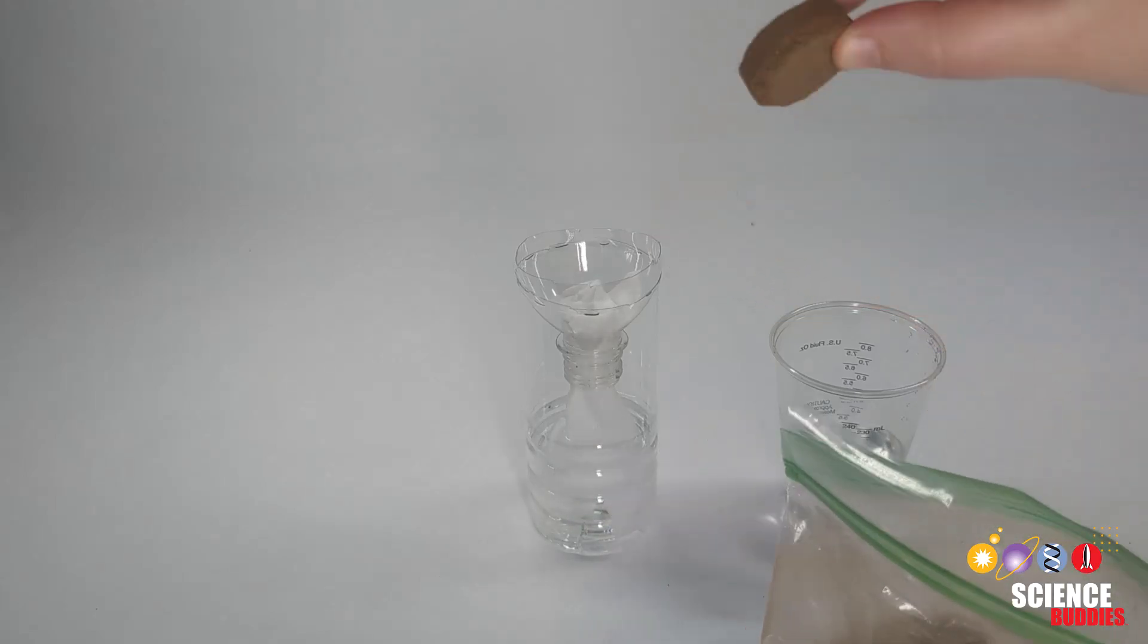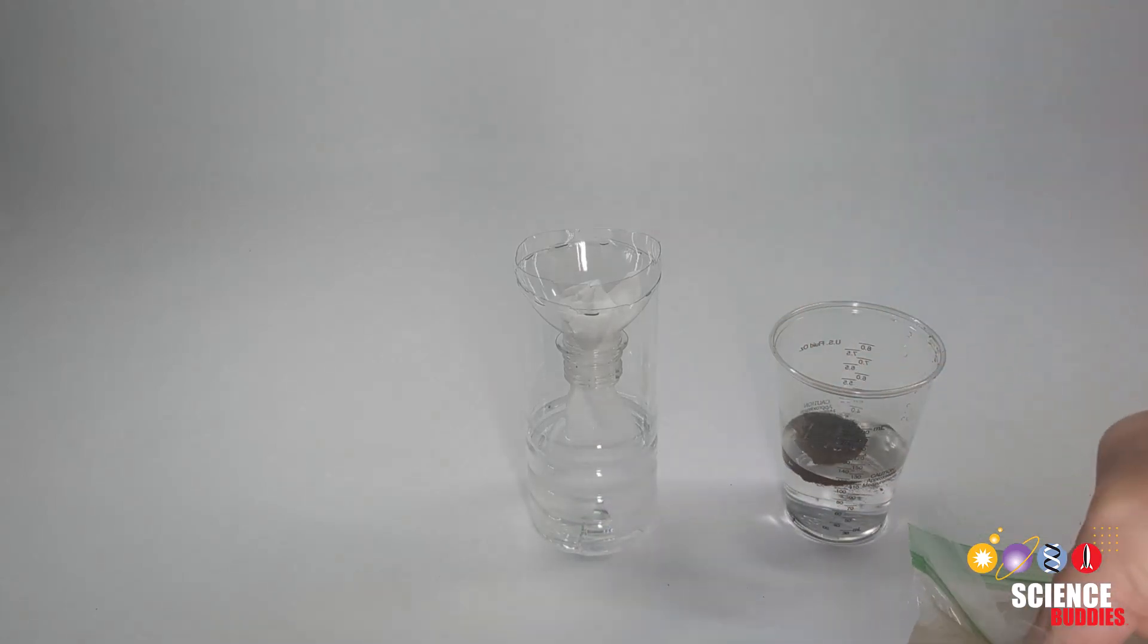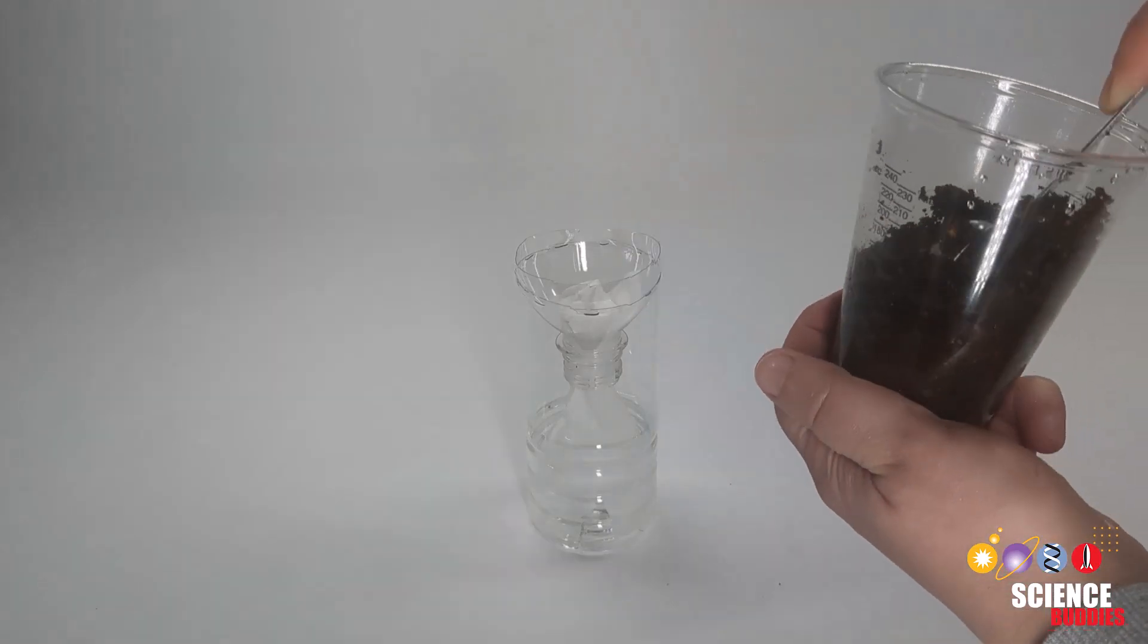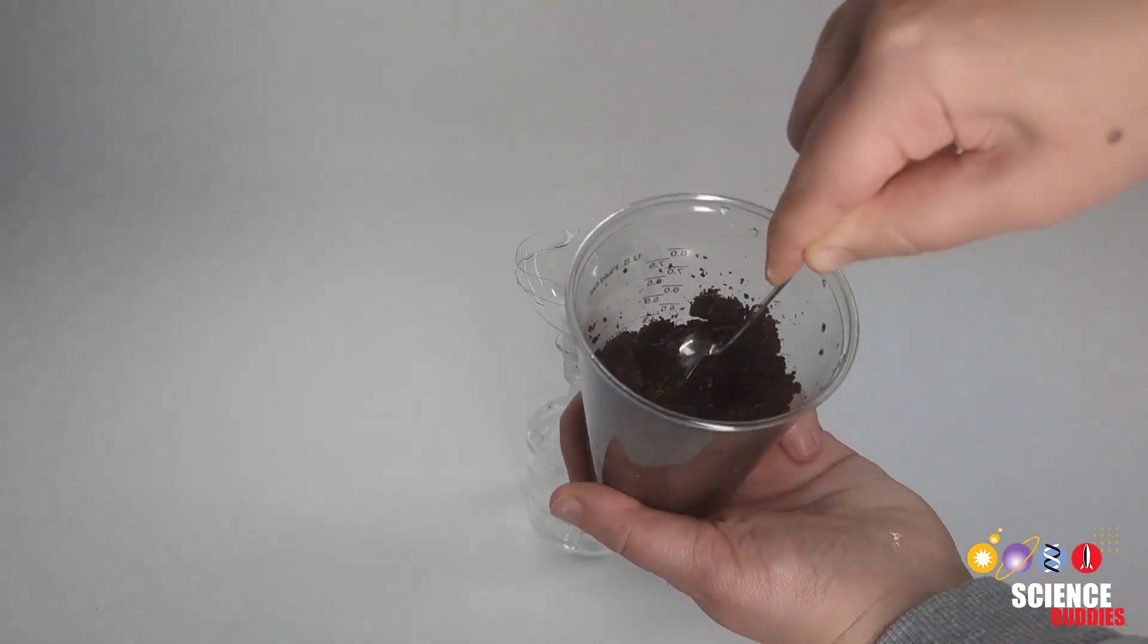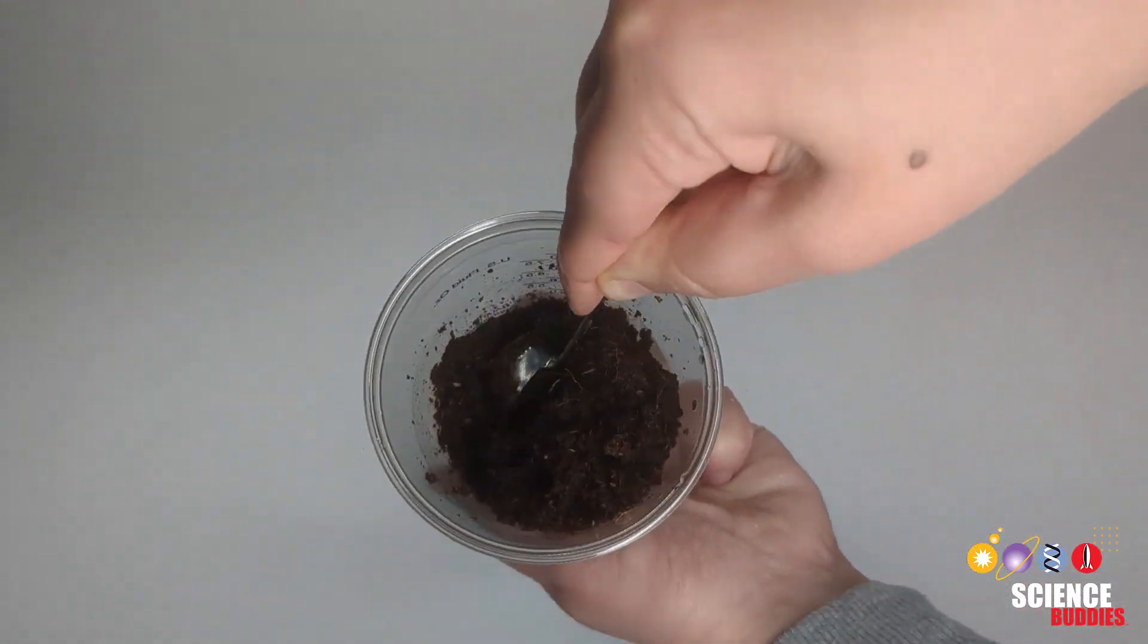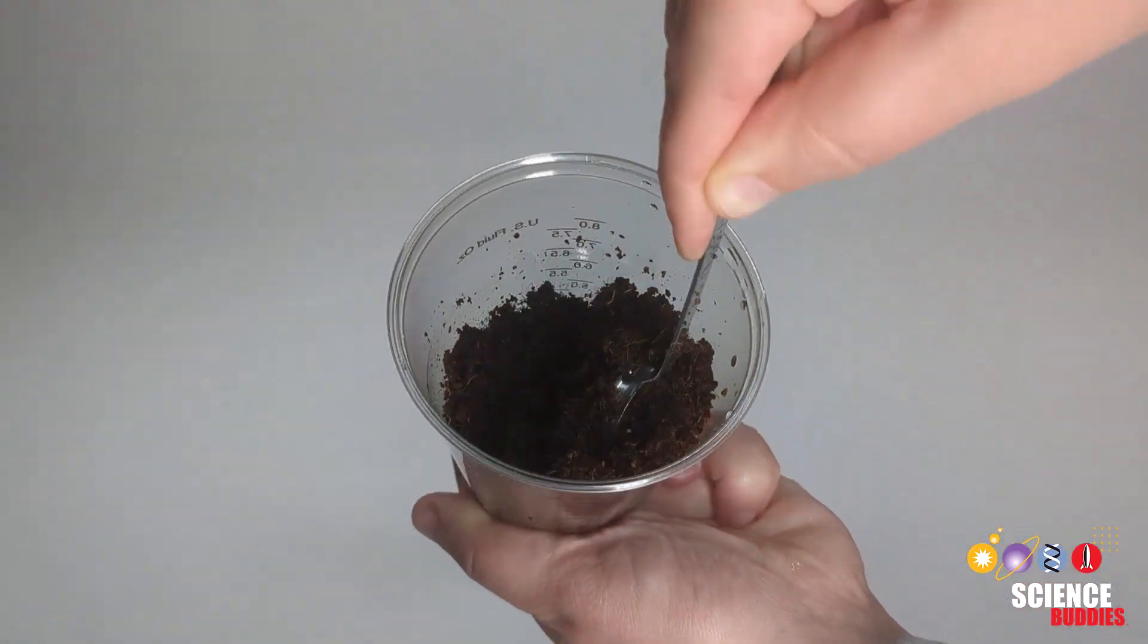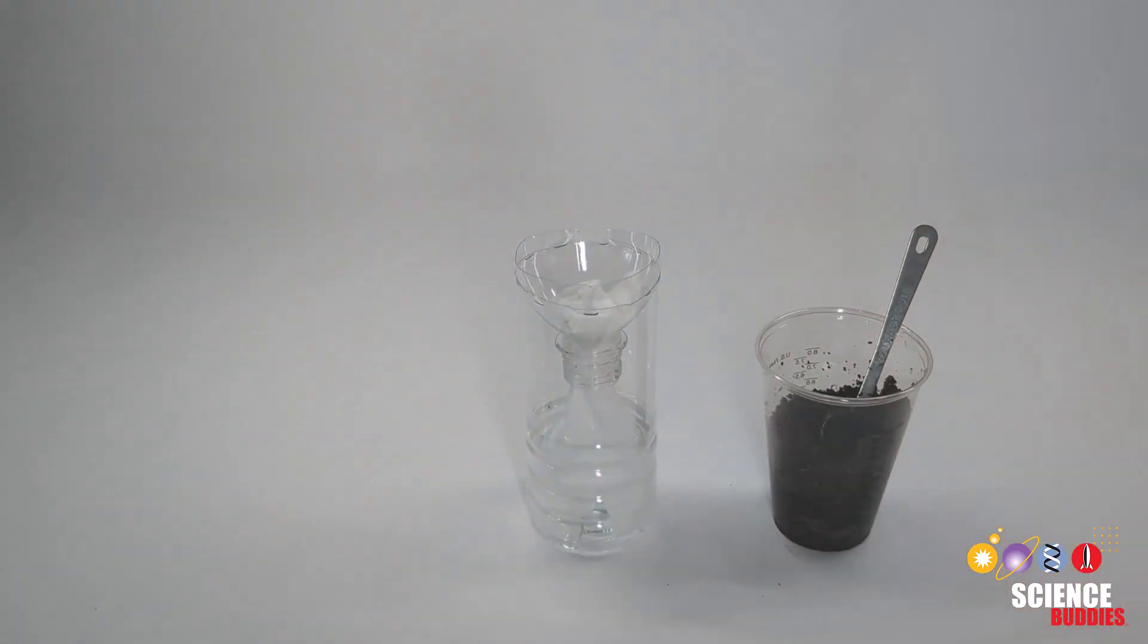Now you'll rehydrate two pellets of coconut core in 100 milliliters of water for every two bottles. Wait about two to three minutes for the coconut core to absorb the water. Then gently mix it with your measuring spoon so that it has a similar consistency throughout the material.